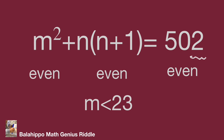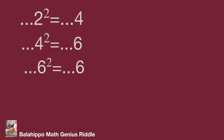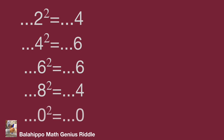Now let's check the last digit of each number. The last digit of 502 is 2. For the last digit of m squared, since m is even: numbers ending in 2 (like 2, 12, 22) squared give last digit 4; numbers ending in 4 (like 4, 14) squared give last digit 6; numbers ending in 6 squared give last digit 6; numbers ending in 8 squared give last digit 4; and 0 squared gives last digit 0.